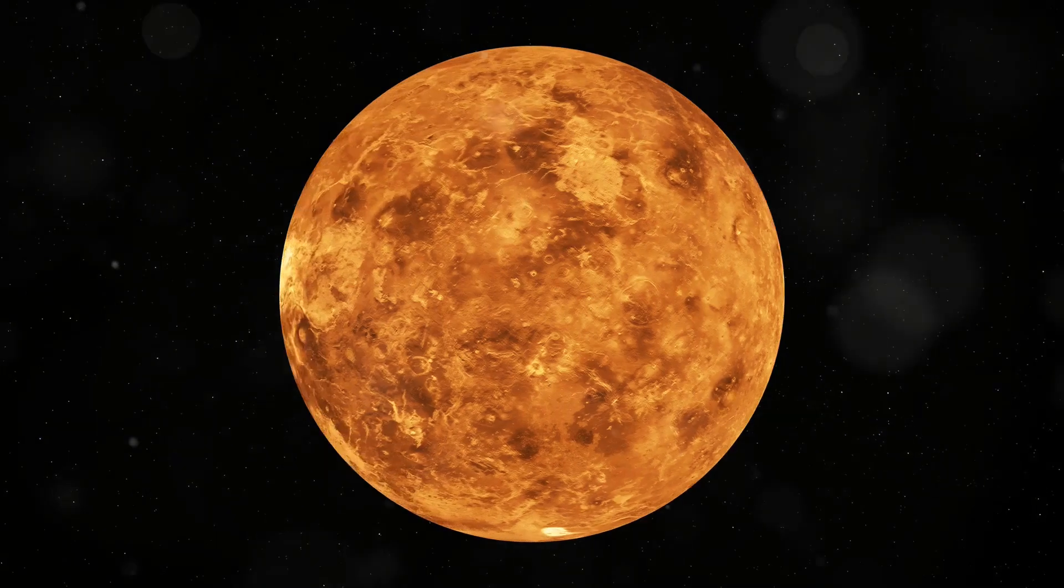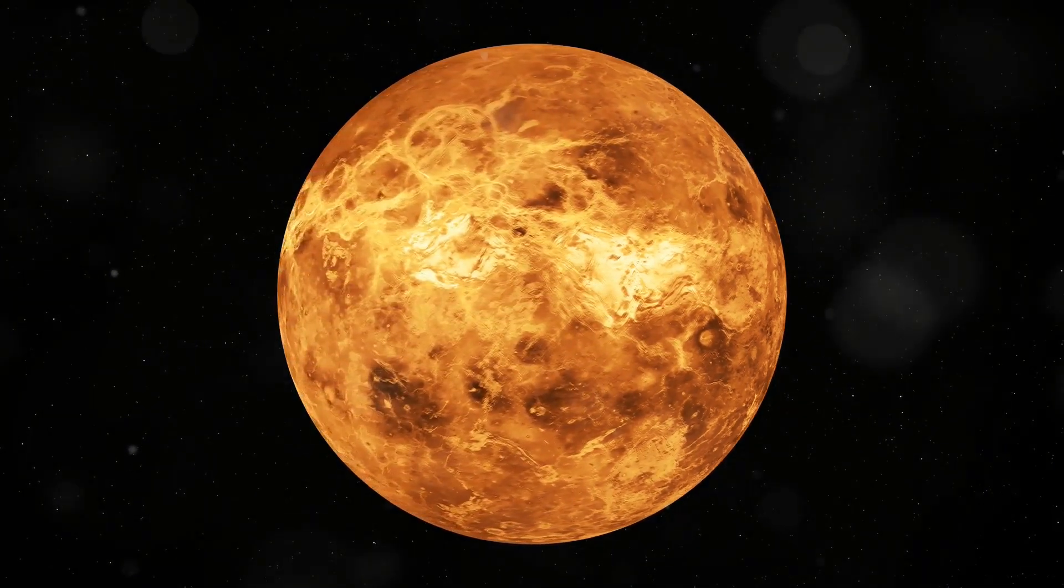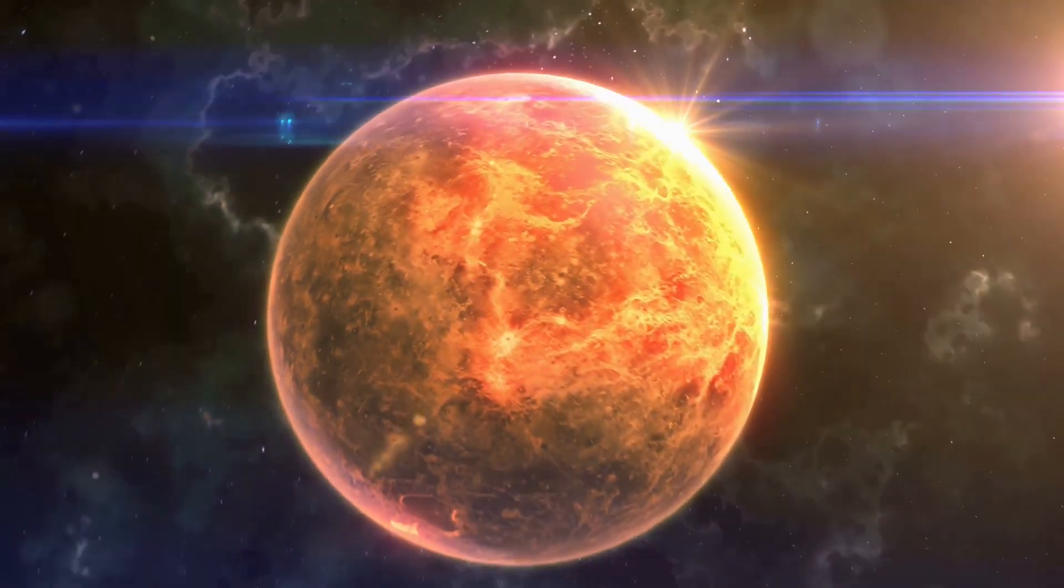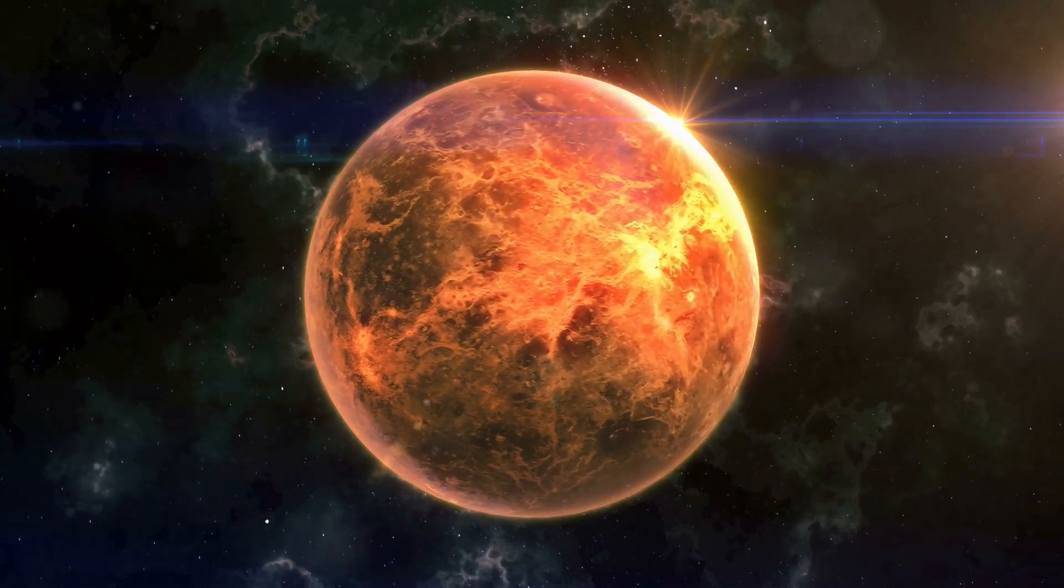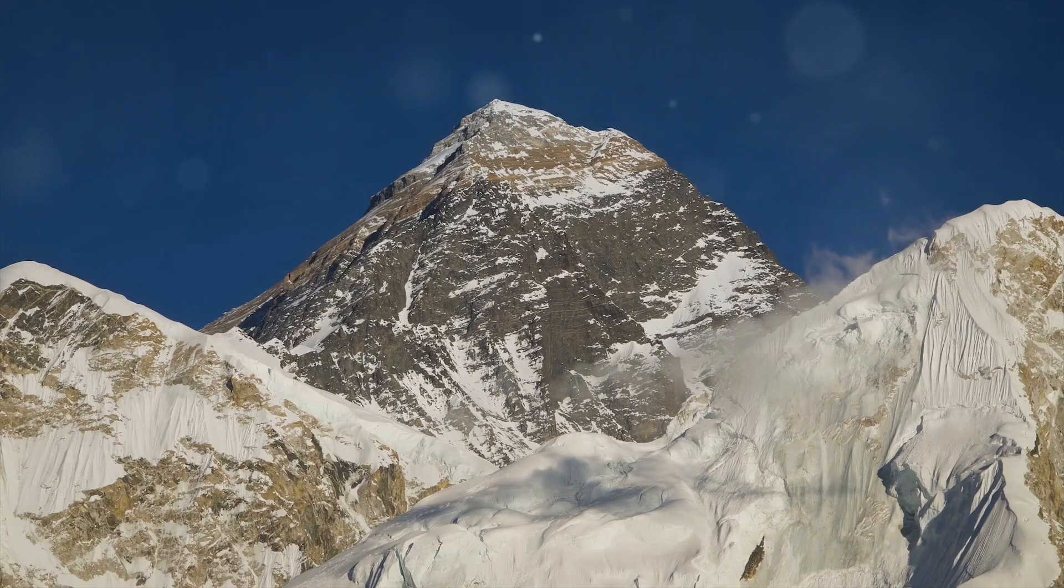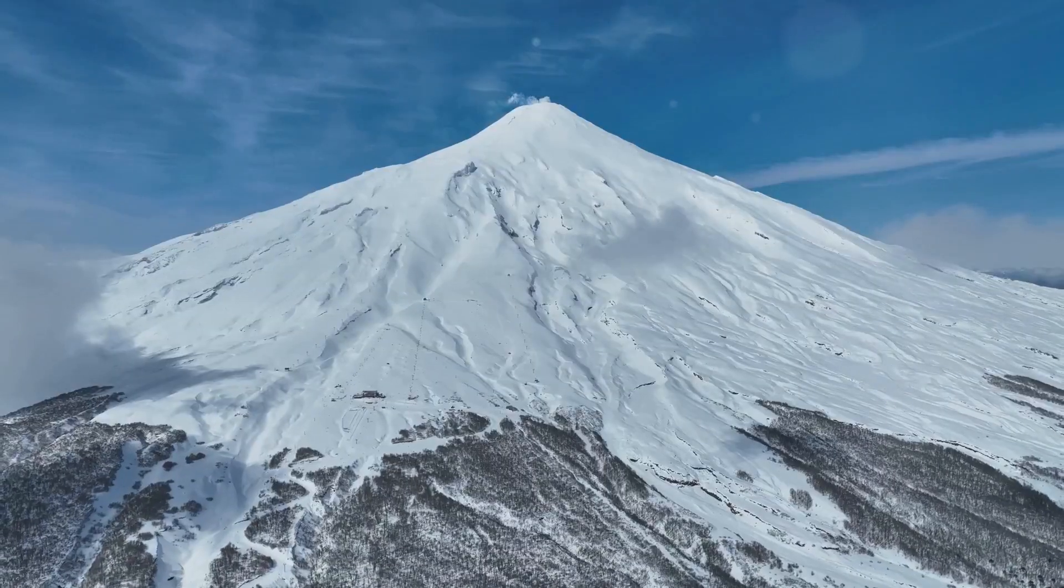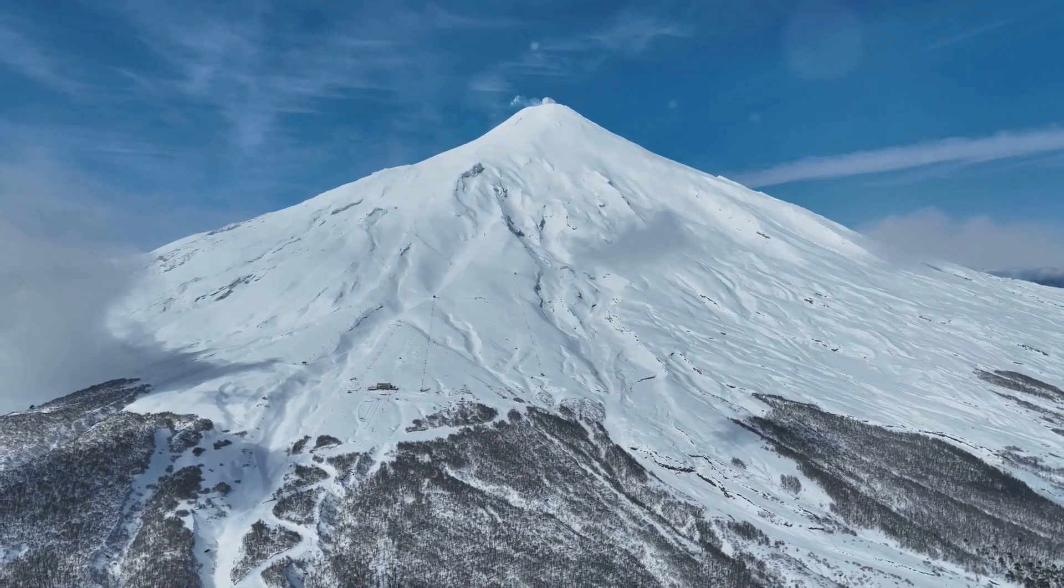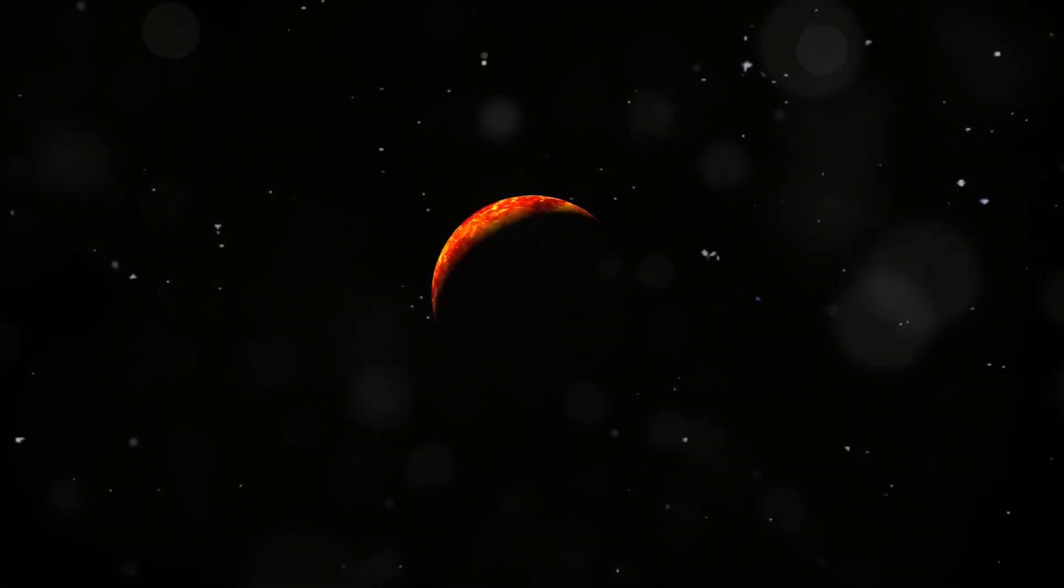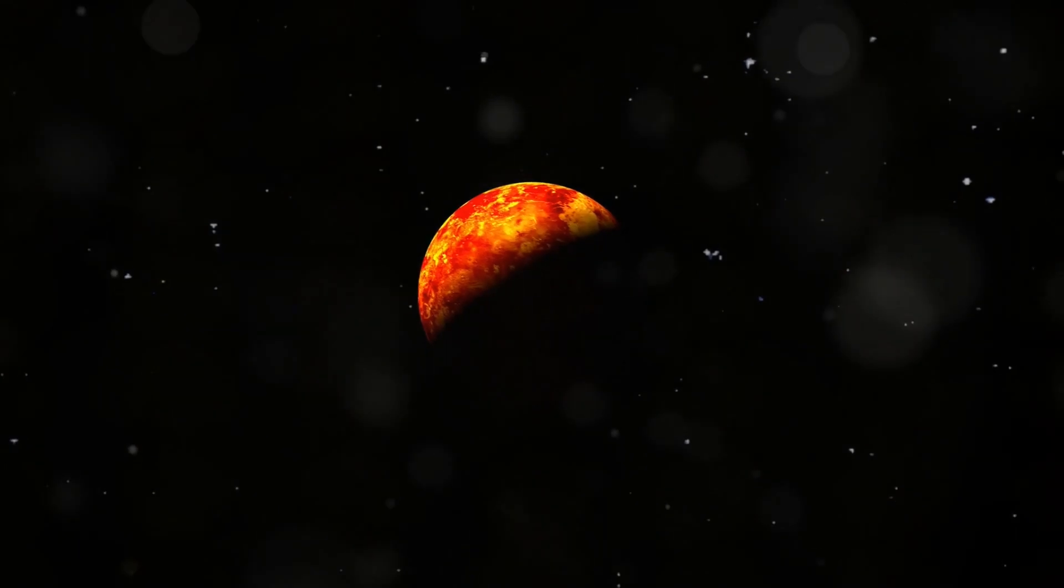Interesting fact. Atmosphere higher than mountains. On Venus, there is one of the tallest volcanoes in the solar system, Maxwell Montes. It's taller than Mount Everest, measuring about 11 kilometers in height. However, unlike on Earth, where the highest peaks rise above the clouds, on Venus, this entire gigantic volcano is enveloped in a dense atmosphere.